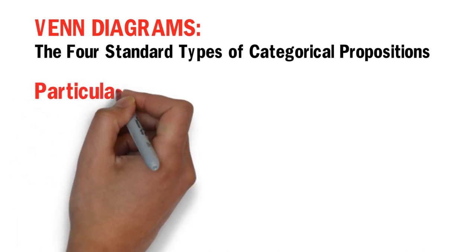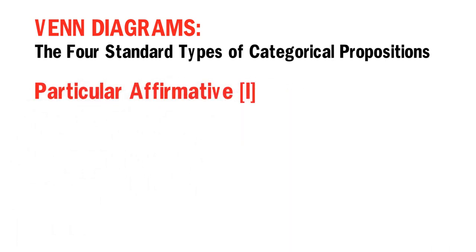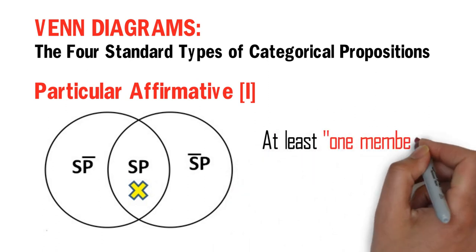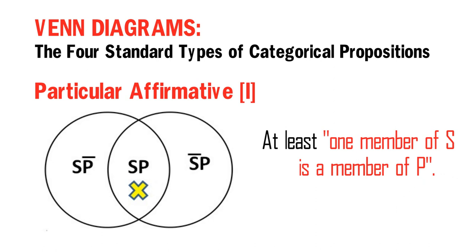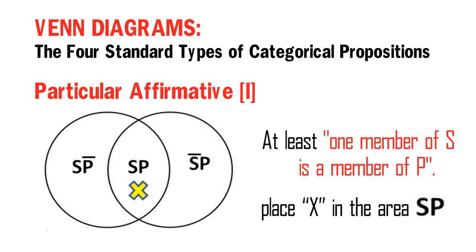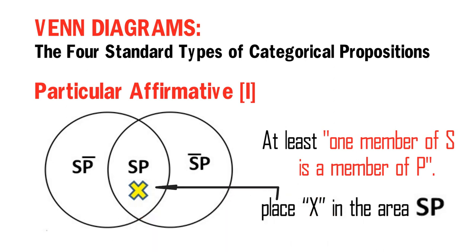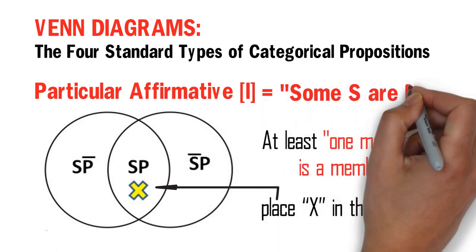Then we have the Venn Diagram for Particular Affirmative I Propositions. A Particular Affirmative I Proposition asserts that there is at least one member of S that is a member of P. This is diagrammed by placing an X in the area 'S and P,' which is common to the two classes. Thus, in the diagram, we place an X in the area 'S and P,' and we say: some S are P.